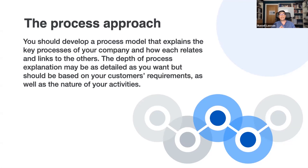You need to assign responsibilities and authorities for processes — basically who does what and who is ultimately in charge. Then you need to address the risks and opportunities: what could go wrong and what are the opportunities available to limit impacts on your business. Then evaluate the processes and implement any changes needed to ensure they achieve their intended results. Finally, look at how to improve the processes and thus your overall quality management system — doing things quicker, cheaper, more productively — always bearing in mind that you're trying to make things better for your customer.